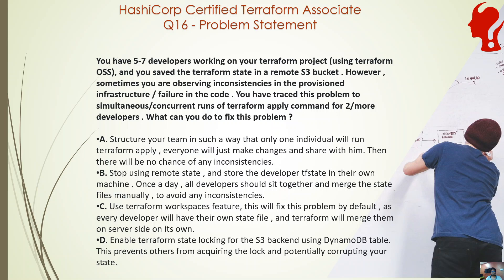Everyone else will be in a queue or will have to wait. This ensures that even if there are many developers working with the same Terraform state backend, any Terraform operation that affects the state goes through a queue. If somebody is working, the other person cannot corrupt the state file. In AWS, if you are using an S3 backend, you need an AWS DynamoDB table for state locking. For Azure, it is natively built into Azure Blob Storage. State locking is very important — you lock the state when working, and when your work finishes, you release the lock so somebody else can capture it. The correct answer is D.